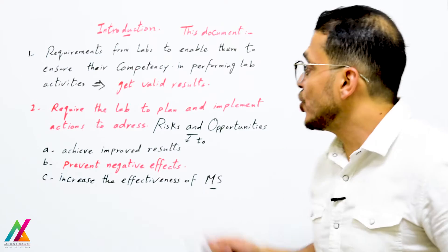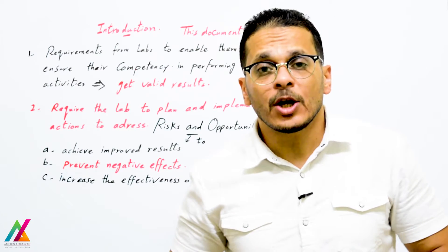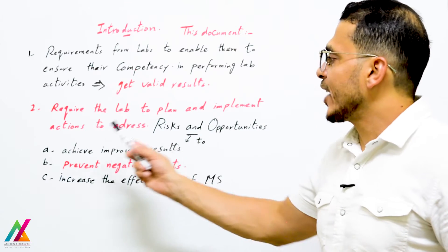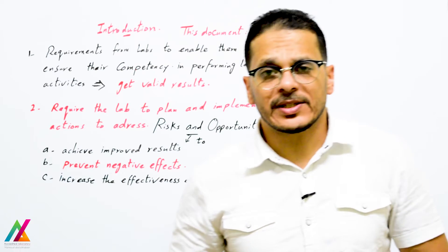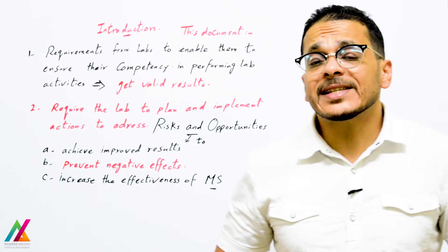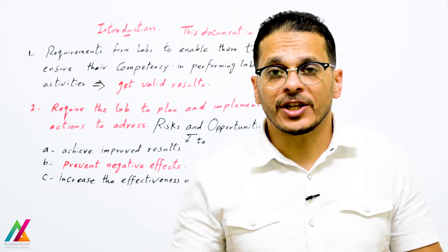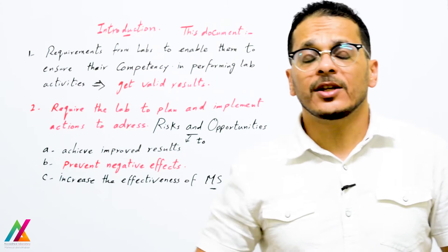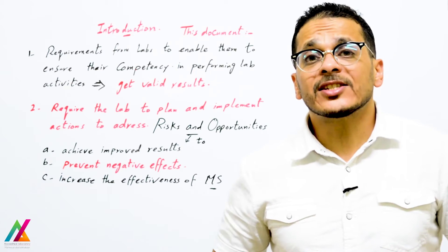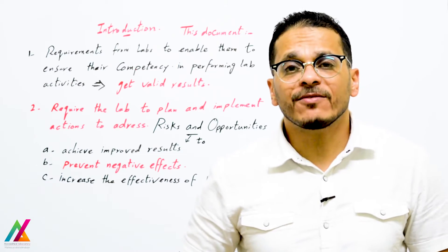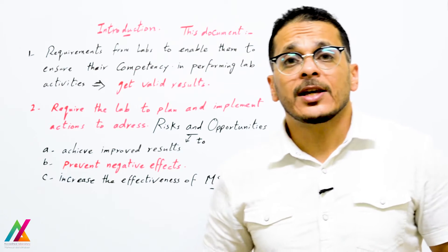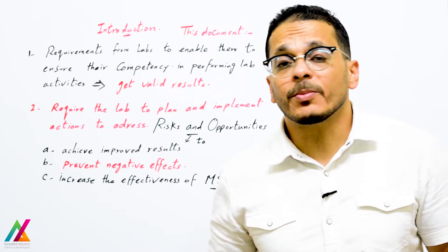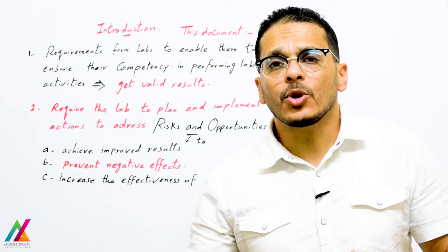The document also requires labs to generate valid results within acceptable ranges, and requires the lab to plan and implement actions to address risks and opportunities. Risks and opportunities is a very important clause added to this edition — clause number 8.5. The lab is required to address all risks that may have a negative effect on lab activities, results, documented information, organizational responsibilities, or any other aspect inside the lab.